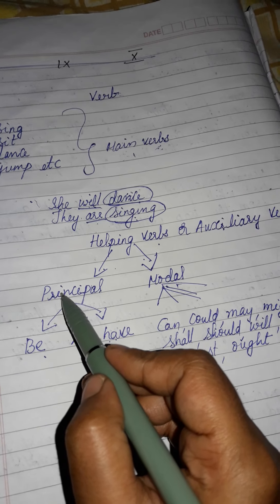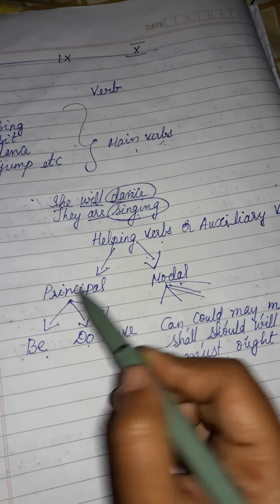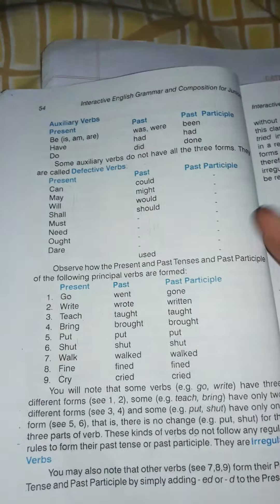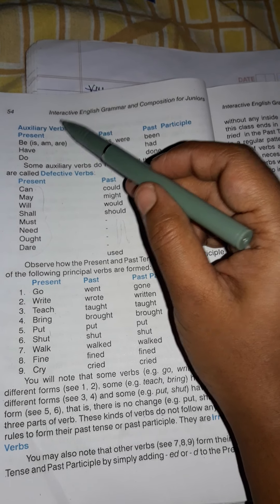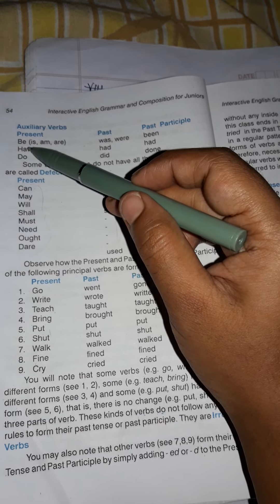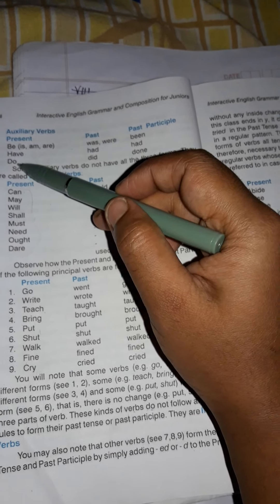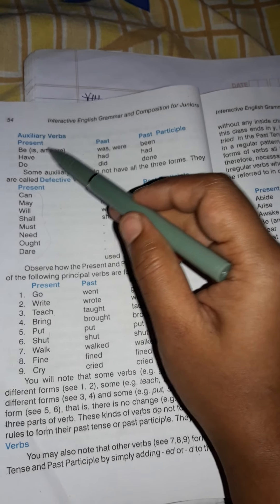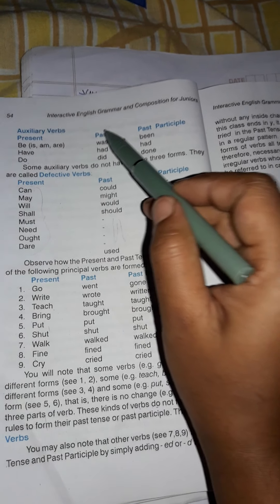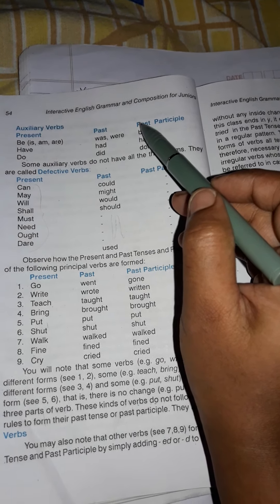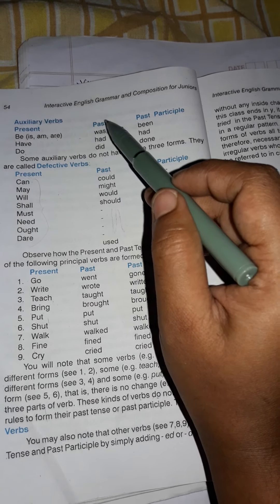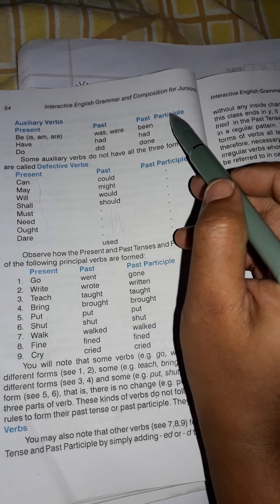Now let's discuss the principal auxiliaries: be, do, have. For be verbs — in the present tense, it means is, am, are. Past: was, were. Past participle: been. So be verbs have three forms: is/am/are (first), was/were (second), been (third).